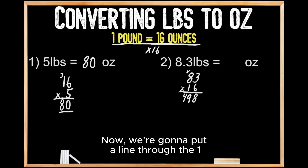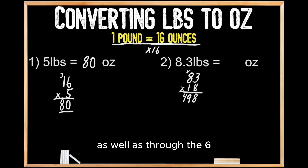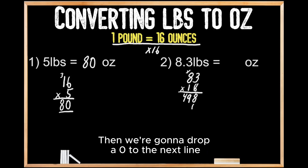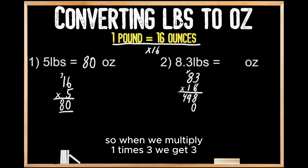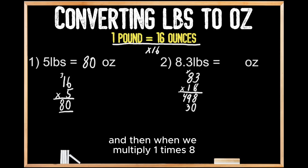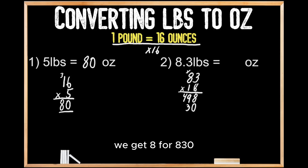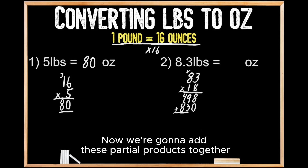Now we're going to put a line through the one as well as through the six because we're done with them. Then we're going to drop a zero to the next line and multiply by our tens place. When we multiply one times three, we get three. And when we multiply one times eight, we get eight, for 830 when we multiply 83 times 10.